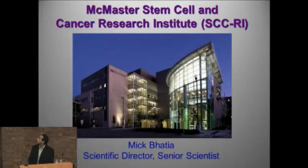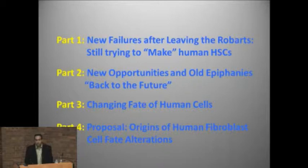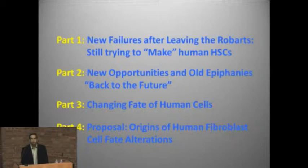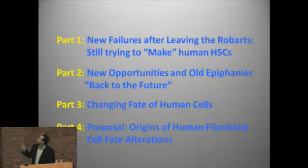I've divided my talk into three parts. Like at the Robarts, we had a lot of failures in experiments, and I have new failures to tell you about now. We're still working on this idea — and Baggi Singh, one of my mentors, is still here. I remember talking to him about trying to make hematopoietic stem cells from ES cells, and he said, okay, give that a try. Well, Baggi, I'm still going at it. I'll talk about some new opportunities and, in the theme of this evening's session — Back to the Future — I'll talk about the changing fates of human cells and a new proposal on how this actually comes to be.